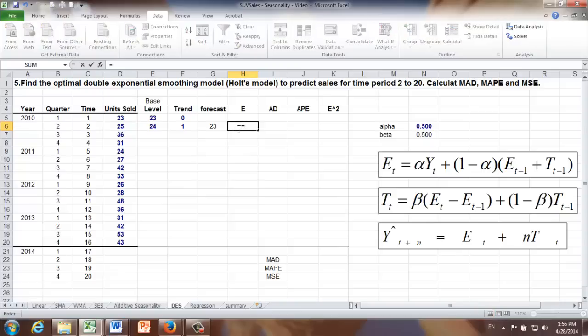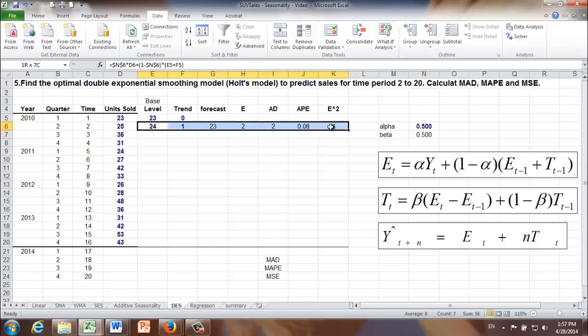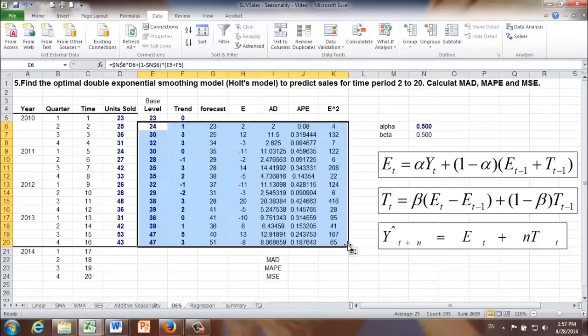The way to calculate E, AD, APE, and E2 are just the same. Forecast error is equal to actual sales minus forecast. AD is just the absolute deviation or the absolute error. APE is the absolute value of forecast error divided by actual sales. In the end, the squared forecast error is forecast error squared. Then we can copy and paste the formulas for all the other remaining time periods.